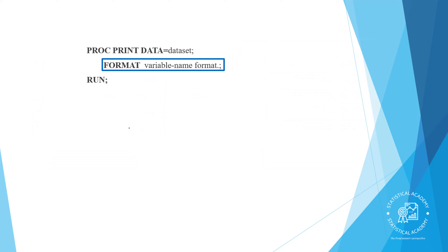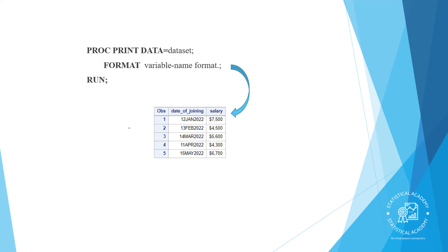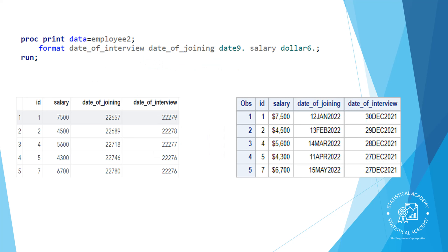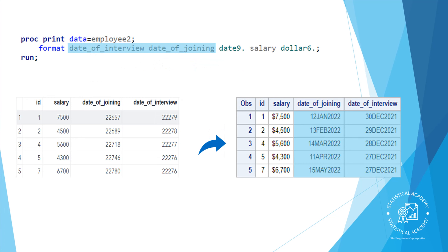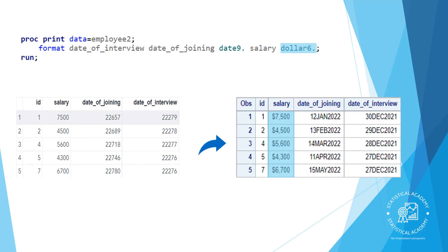To control how values appear in your reports, we can apply SAS formats to variables by adding the FORMAT statement to your PROC step. You use the keyword FORMAT followed by the variable name and the SAS format you want to apply. You can format any number of variables in a single FORMAT statement. Remember that formats impact the way values are displayed in the procedure results — they do not change the raw data values. In this example we format date of interview, date of joining with the DATEname format, and salary with the DOLLAR6. format.